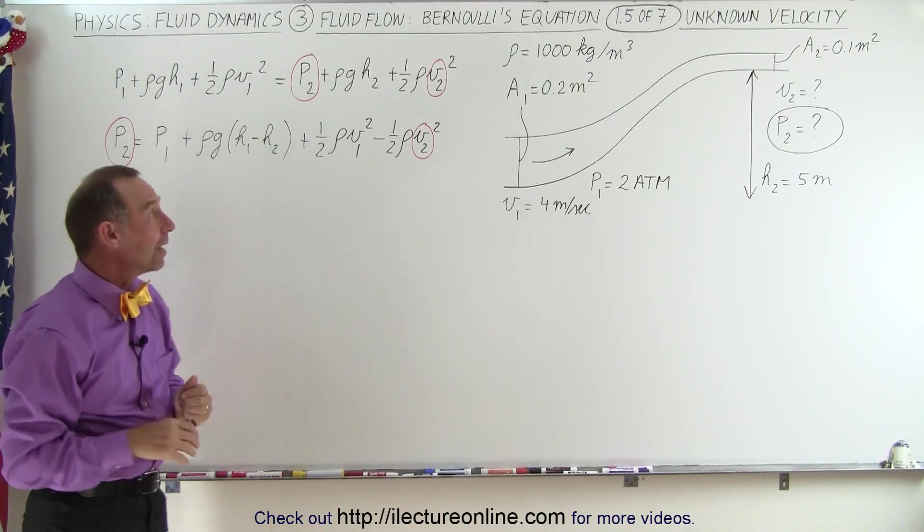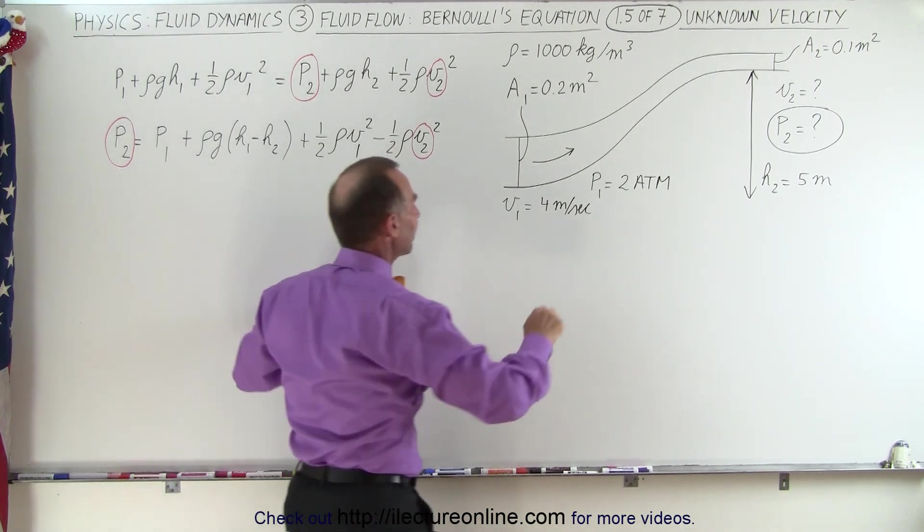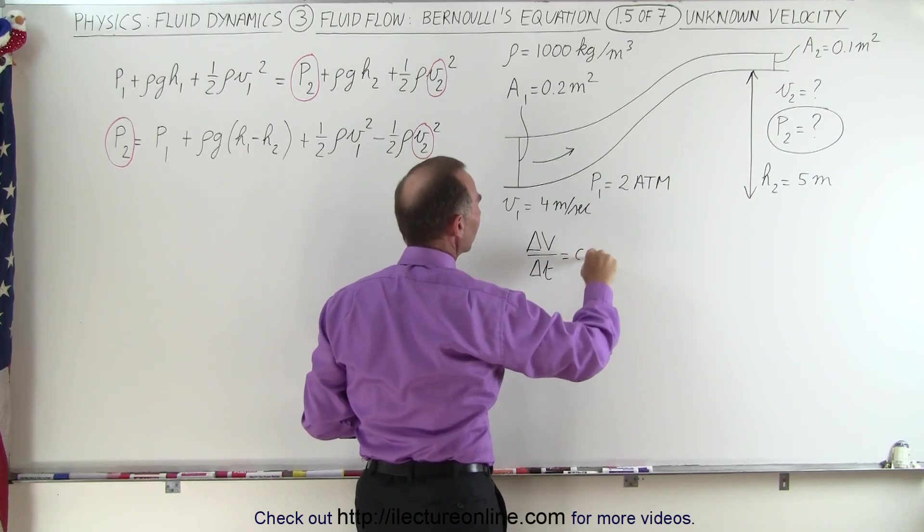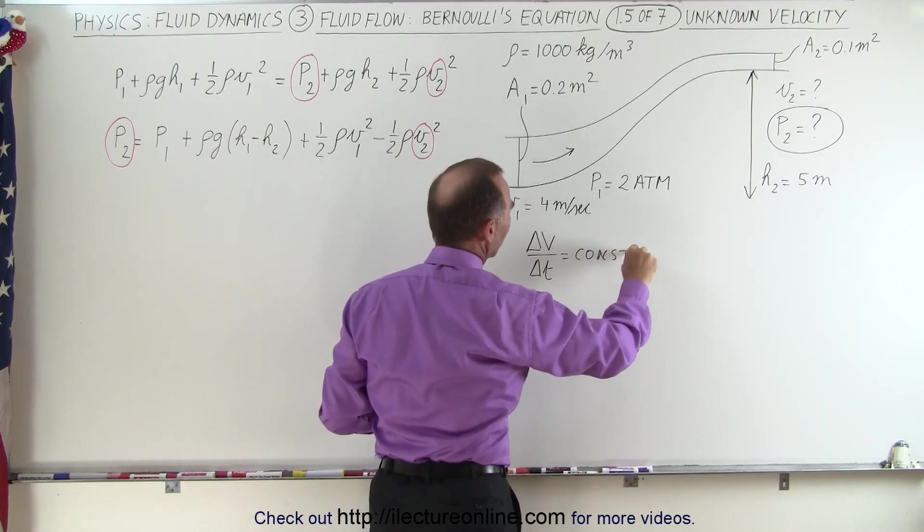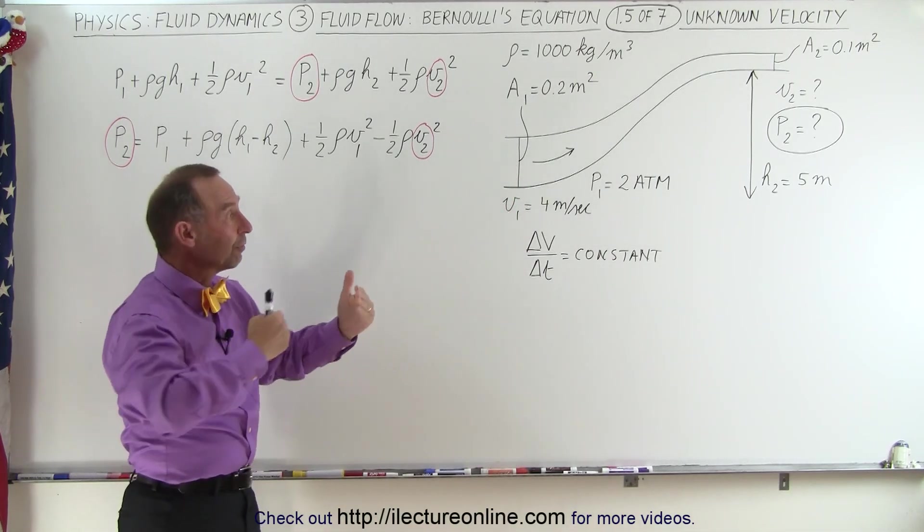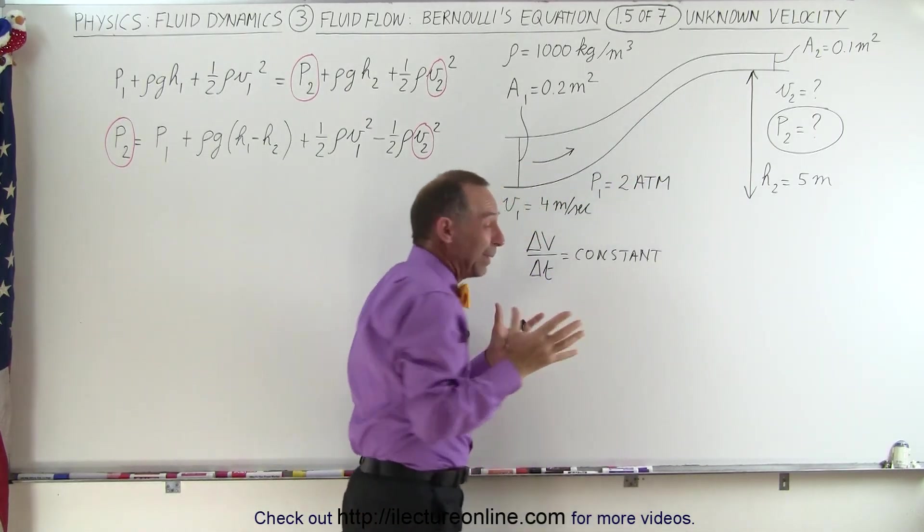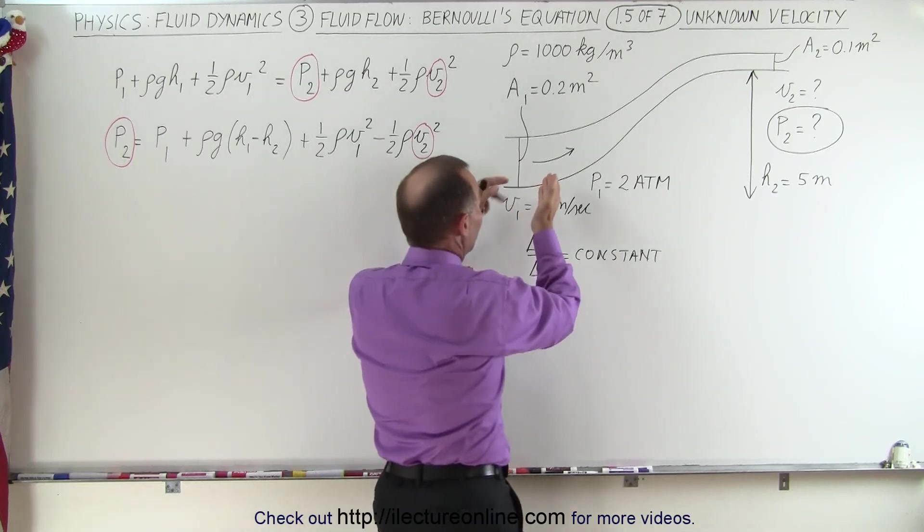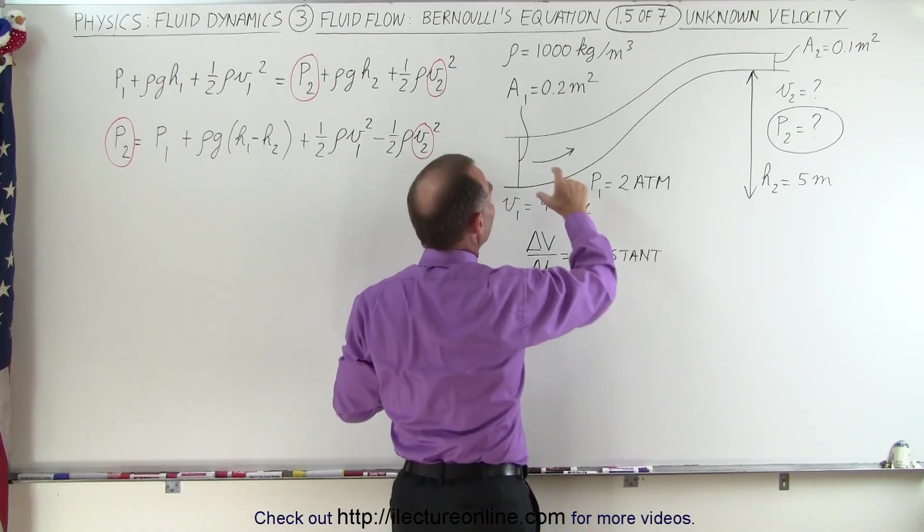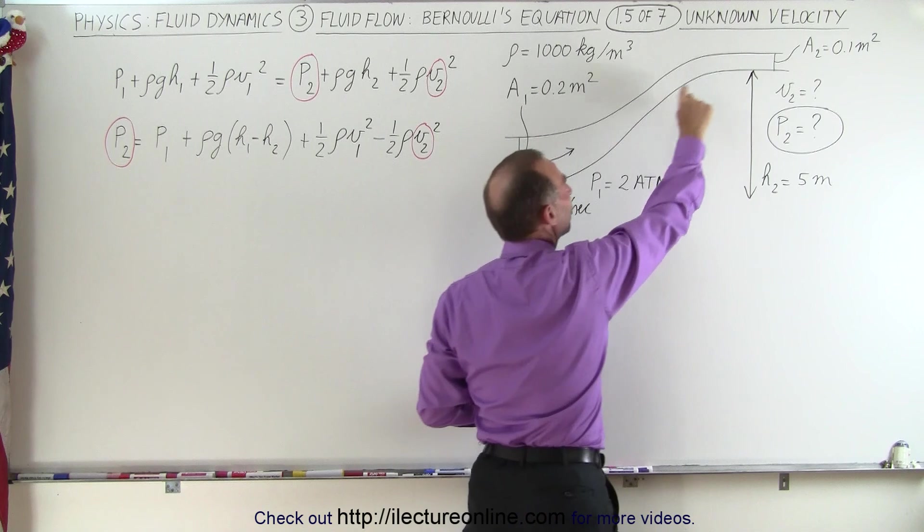Well the way we can find out the velocity at point 2 is to use a second equation. We know that the amount of fluid, the amount of volume of fluid per unit time has to be a constant. In other words, it doesn't matter if the pipe becomes smaller or wider, the velocity will adjust itself in such a way that since the fluid cannot escape the pipe and you cannot add additional fluid to the pipe, the amount of fluid per unit time flowing through the pipe has to be the same anywhere along the pipe.